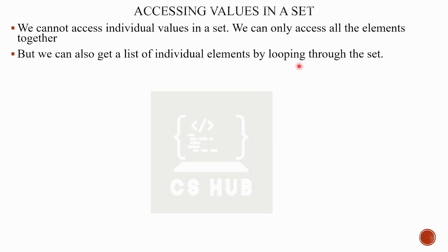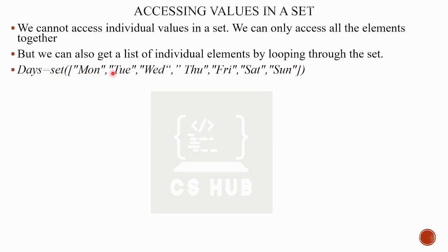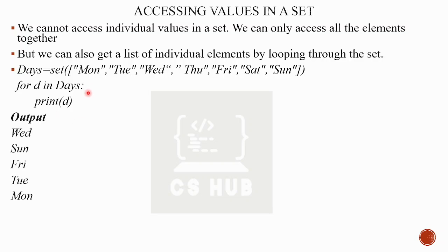If we have access, we can print the elements. For example: days = {'Monday', 'Tuesday', 'Thursday'}. Then we are going to print it using a for loop. For D in days — days is our set name, D is the loop control variable — print D. But we won't get the output in the same order as Monday, Tuesday, Wednesday, because there is no particular index and no ordering mechanism. This is about accessing values in a set — we cannot access individual values, but we can print them using the looping mechanism.